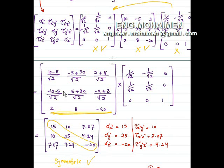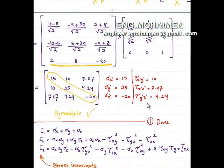If you have any problem with multiplying the matrices, you need to refer to a tutorial on how to multiply 3×3 matrices. The resulting intermediate matrix is then multiplied by the transpose of A. After multiplying these two matrices, we get the resulting matrix, which is the stress after rotation.